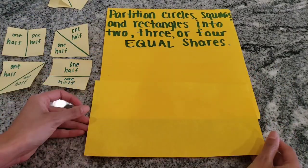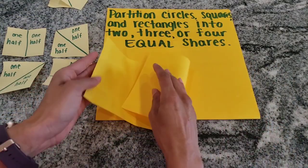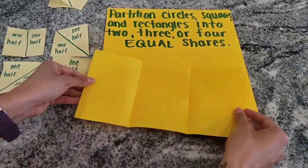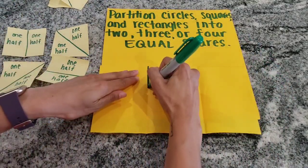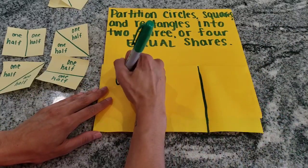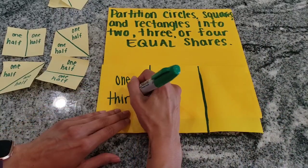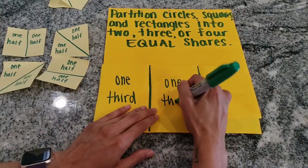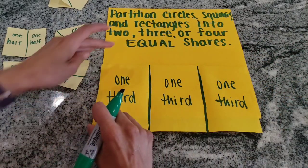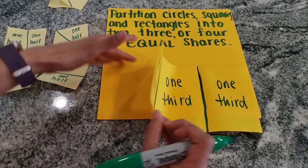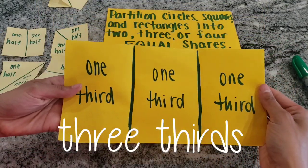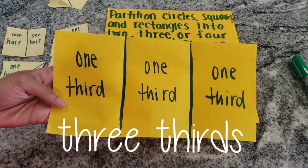Let's partition this rectangle into three equal shares. If you're doing this at home with me, I want you to label where you partitioned your rectangle and then label each part. The rectangle is cut into three equal shares. Each piece is one-third of the whole rectangle, so the rectangle has three-thirds.